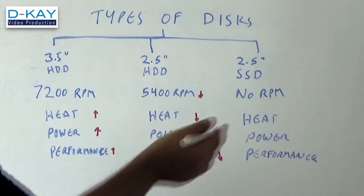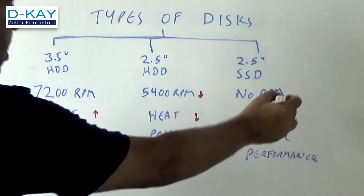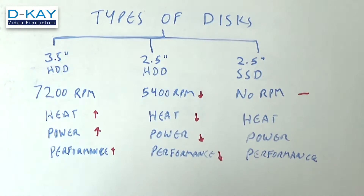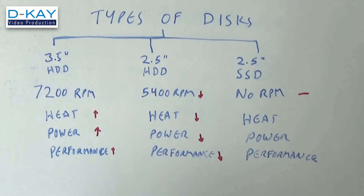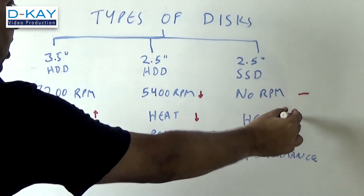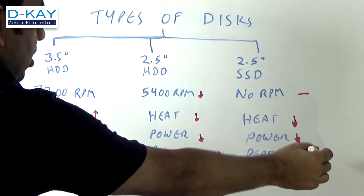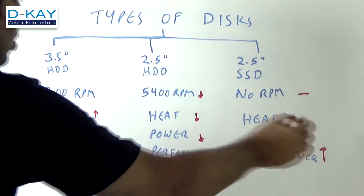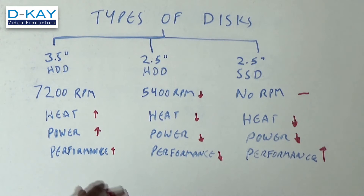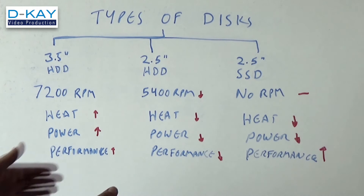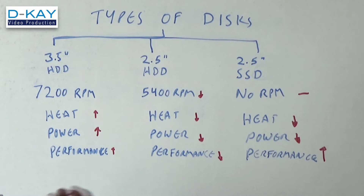When we come to SSDs, they do not have any RPM. There is nothing rotating inside — these are just microchips that are able to save your data. They generate lesser heat and consume lesser power, but they give the best performance. The only downside is they are going to cost you a lot more compared to the hard disk drive because they use advanced microchip technology.